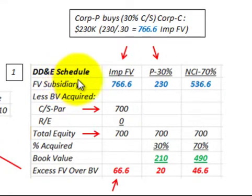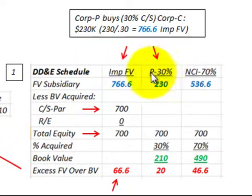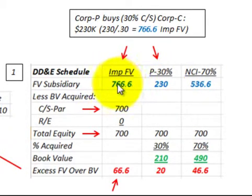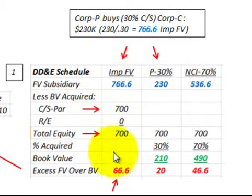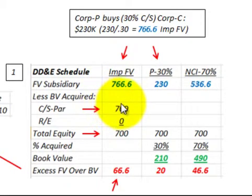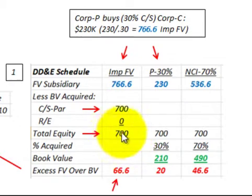Now let's look at our distribution schedule, treating corporation C as a subsidiary. Corporation P bought 30 percent for $230,000, so the implied fair value of corporation C is $766,600. The non-controlling interest would get 70 percent, which is $536,620. We're using this distribution schedule to determine the excess of fair value over book value. Corporation C's book value is $700,000 — all in common stock.